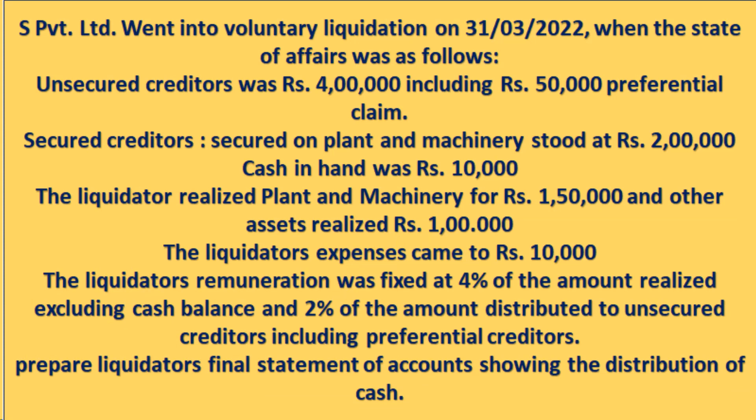S Private Limited went into voluntary liquidation on 31st March 2022 when the state of affairs was as follows: unsecured creditors were ₹4 lakh including ₹50,000 preferential claim. Secured creditors secured on plant and machinery stood at ₹2 lakh. Cash in hand was ₹10,000. Liquidator's expenses came to ₹10,000. Liquidator's remuneration was fixed at 4% of the amount realized excluding cash balance. Prepare liquidator's final statement of accounts showing the distribution of cash.